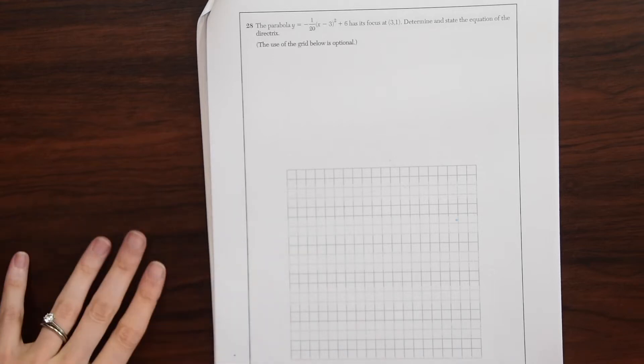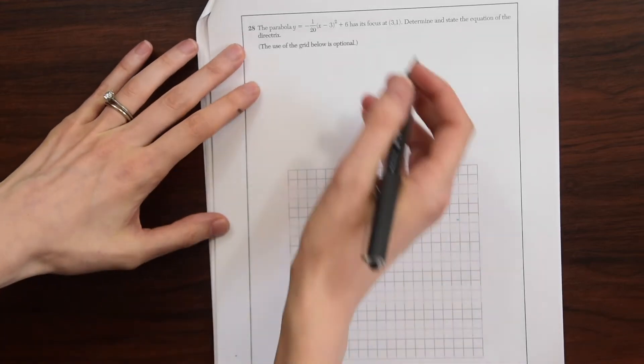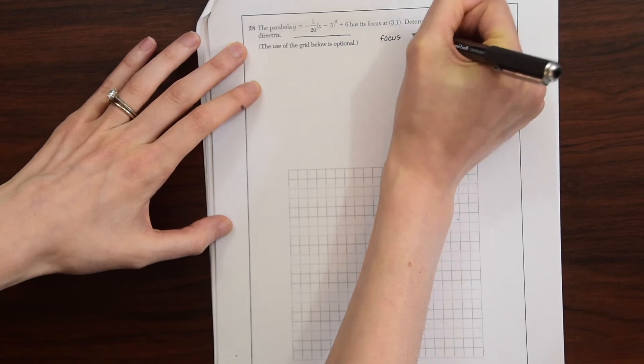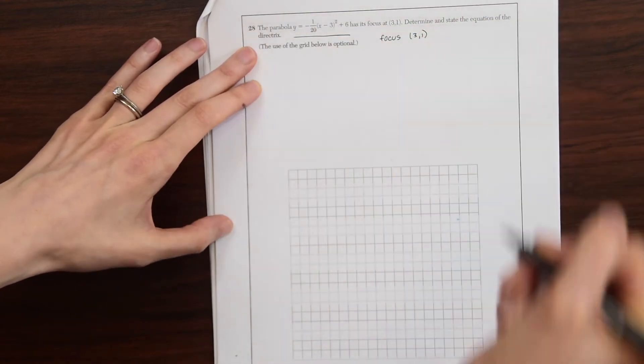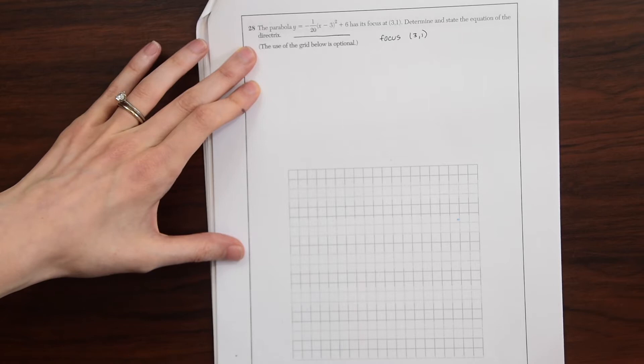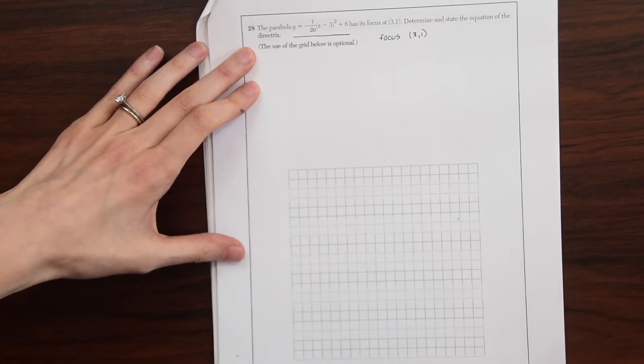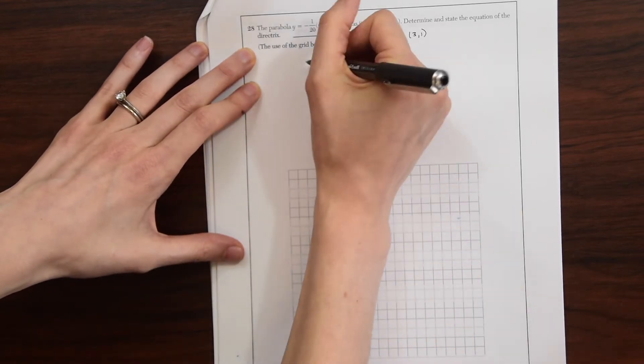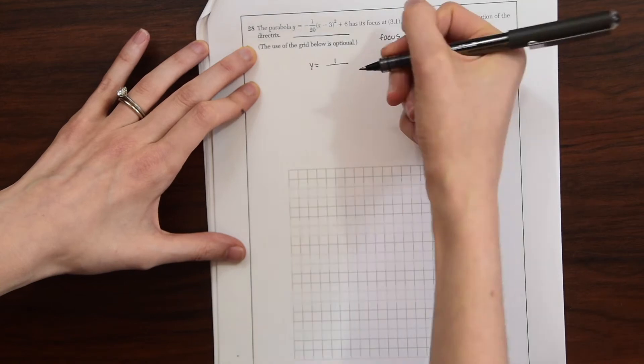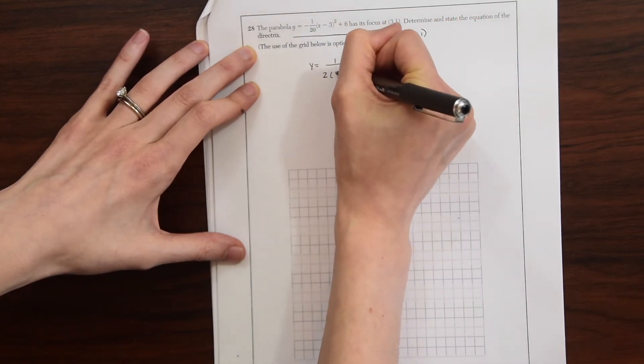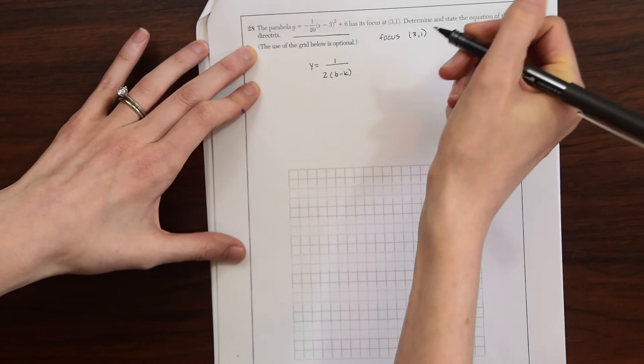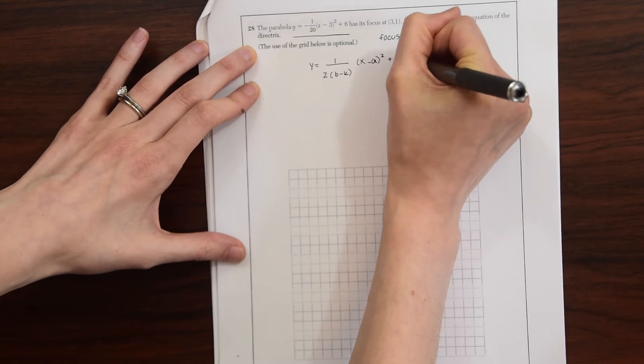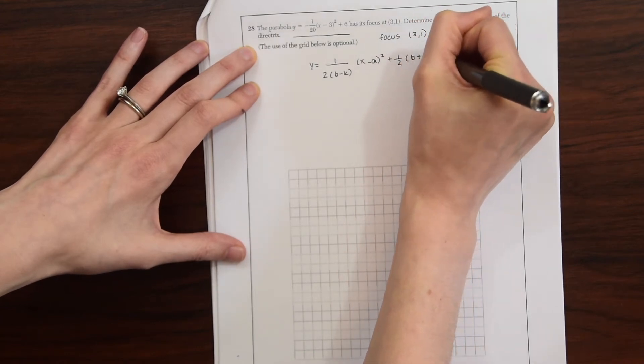So let's first use what they give us. We have our equation here, they give that to us, and then we have the focus at 3, 1. So if we remember the equation for a parabola when we're working with foci and directrices, it looks something like this. It's y equals 1 over 2 times b minus k times x minus a squared plus 1 half b plus k.